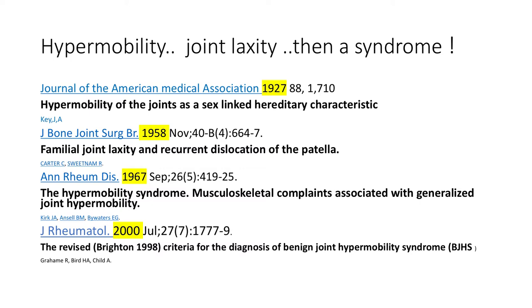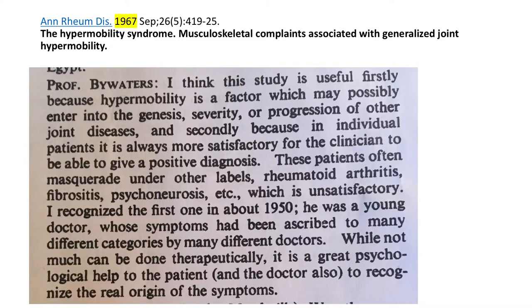I want you to spend some time looking at this slide. I was quite emotional when I read it — it was written in 1967, 50 years ago. This is a published discussion between doctors at the end of the paper. At that time, 50 years ago, we're talking about a patient being misdiagnosed as having rheumatoid arthritis, fibromyalgia, and psychoneurosis. In my opinion, it's still happening today. I get patients on a regular basis who've been labeled as having all sorts of other things. Hopefully we will do something to change that.